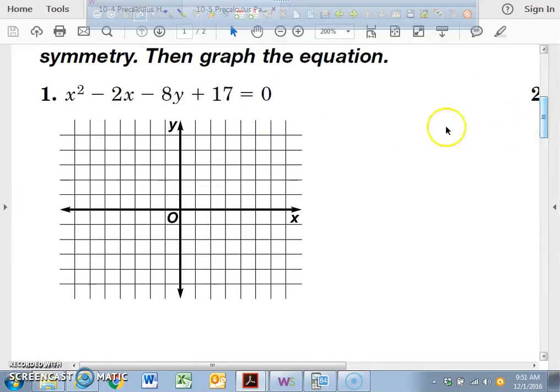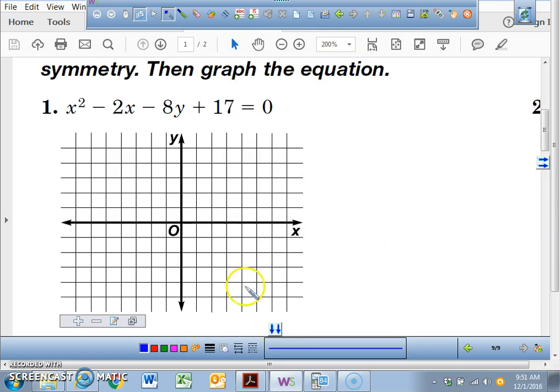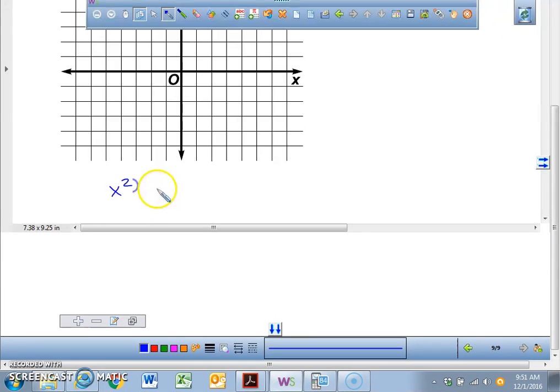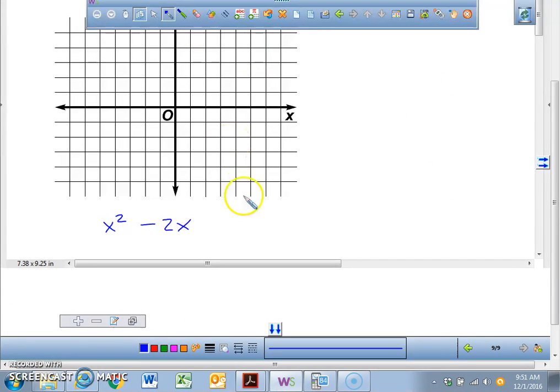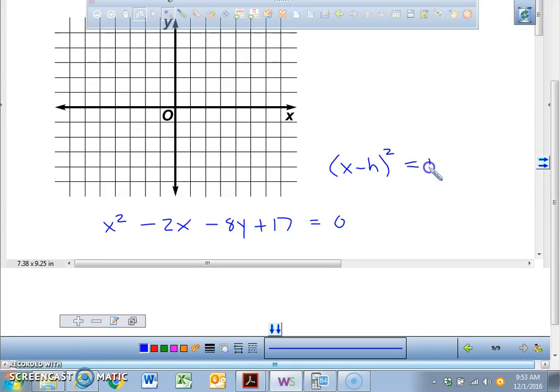All right, so right now what we're going to do is we're going to take this equation and we're going to build the parabola that goes with this equation. So right now, on your paper, you should have written down x squared minus 2x minus 8y plus 17 equals 0. Now the x's are being squared. So the formula, or the standard equation for this right here, is going to be x minus h, close parentheses, squared, equals 4 times p, open parentheses, y minus k.